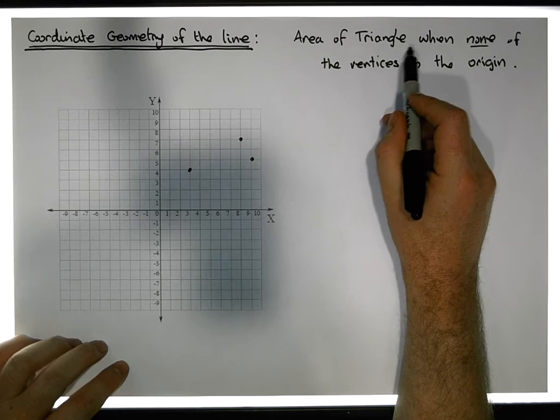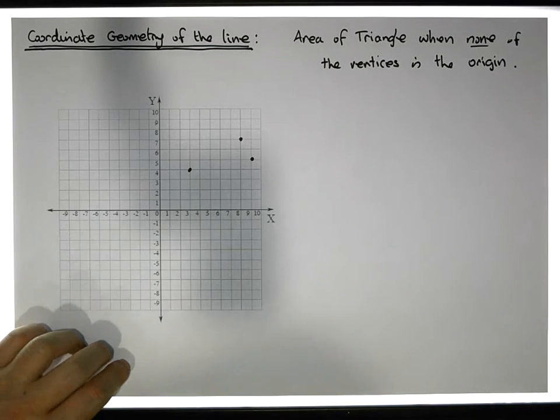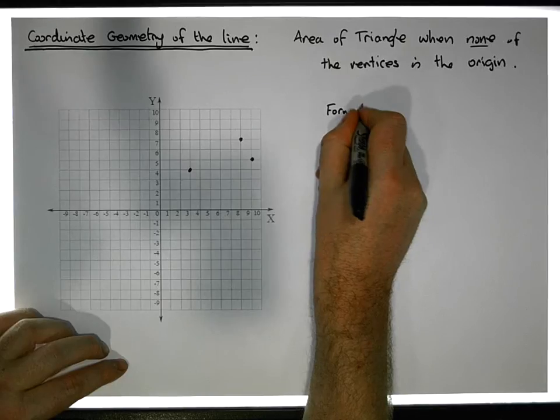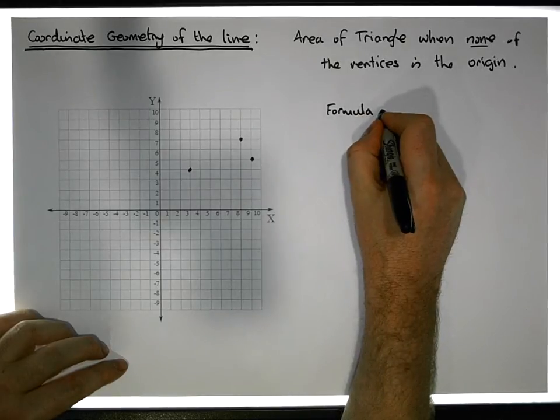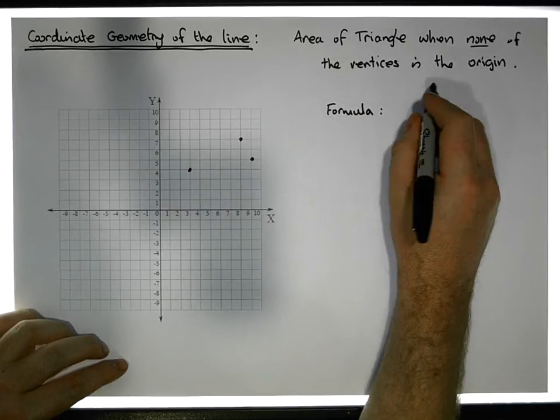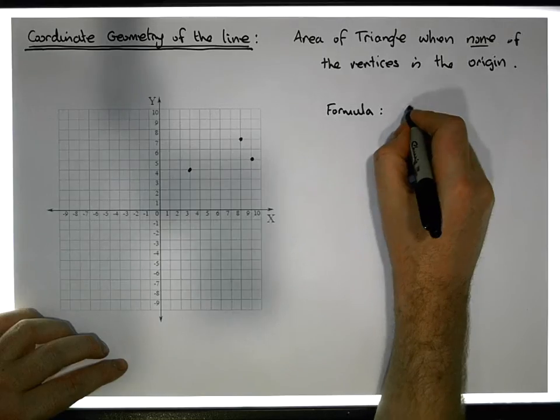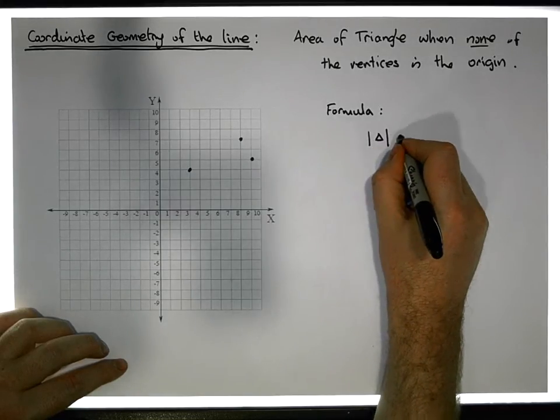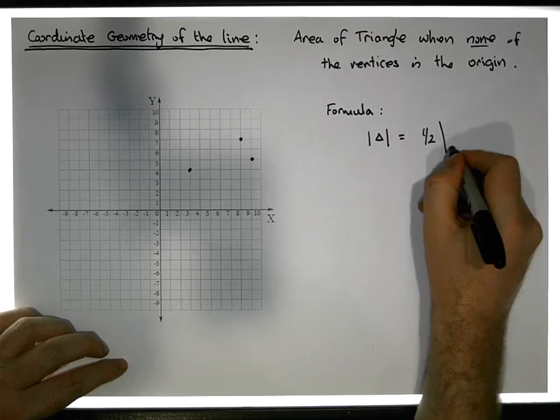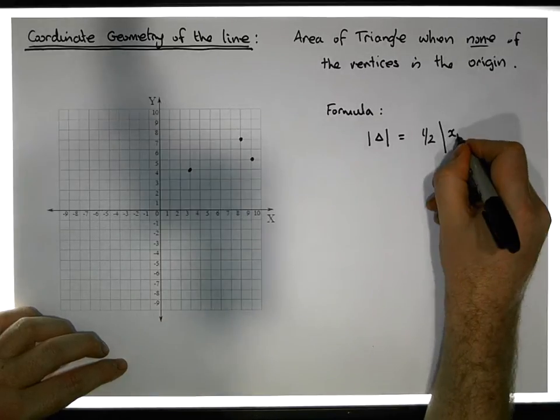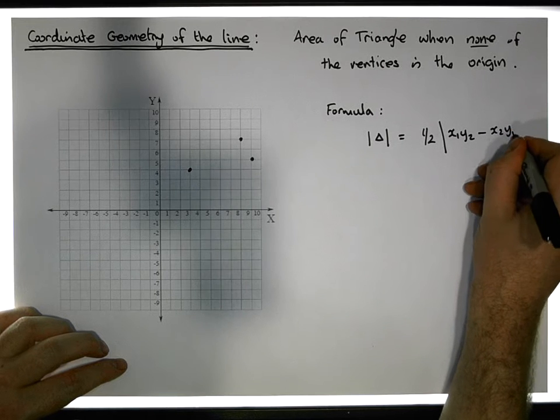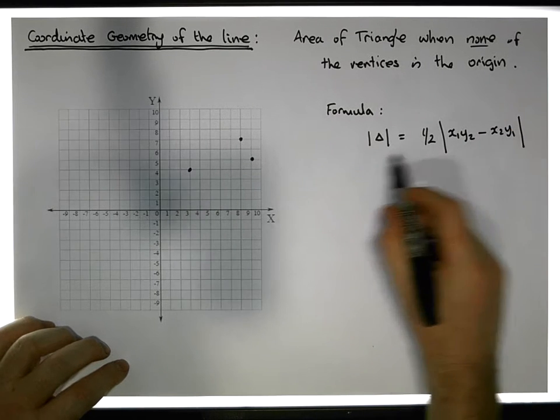We do have a formula that allows us to calculate the area of a triangle. The area of a triangle is equal to one-half times the absolute value of x1 times y2 minus x2 times y1.